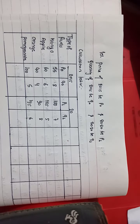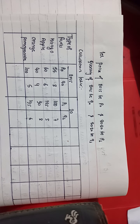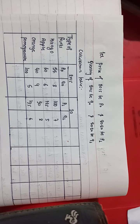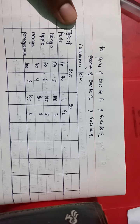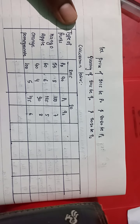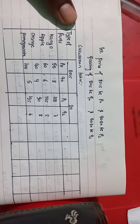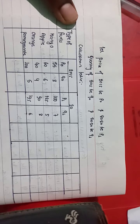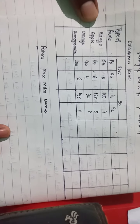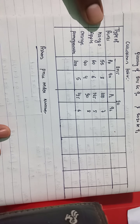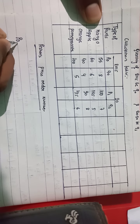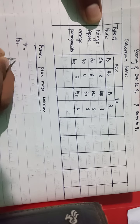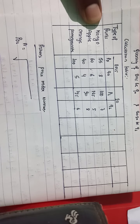Before setting up the calculation table, we must know the formula we are going to use. Since nothing is mentioned in this question, we will use Fisher's Price Index Number. Fisher's formula is the geometric mean of Laspeyres and Paasche formulas. In the Laspeyres case, the base year weights are used, and in the Paasche case, the current year weights are used.